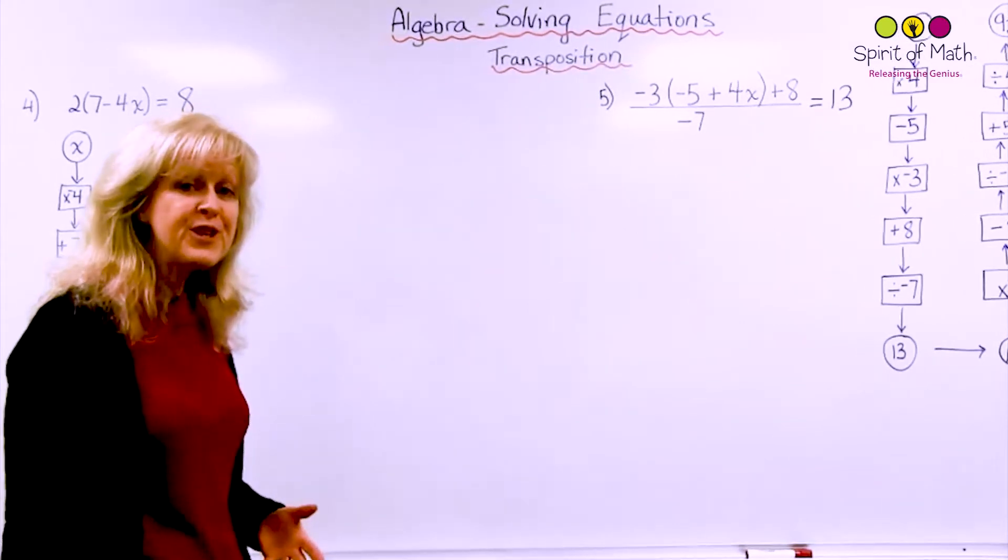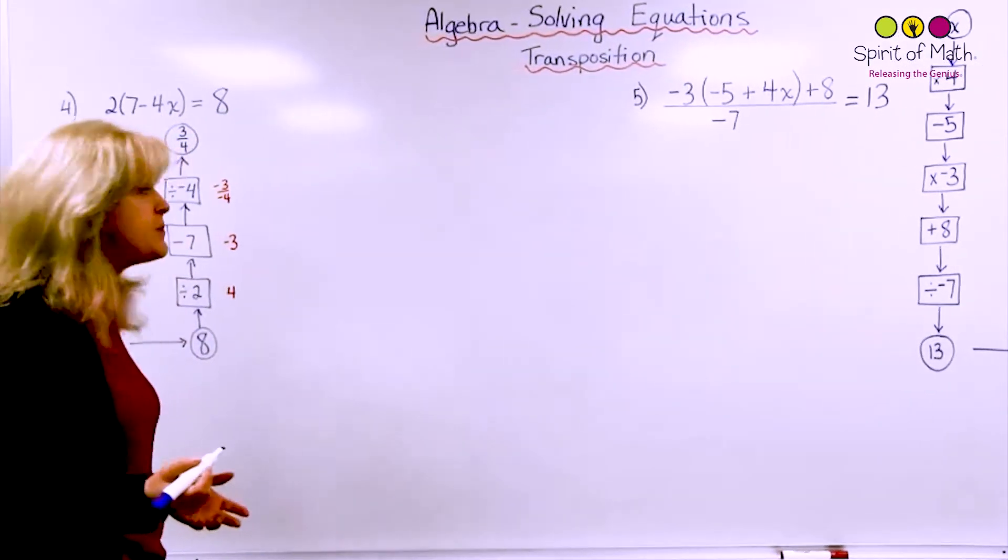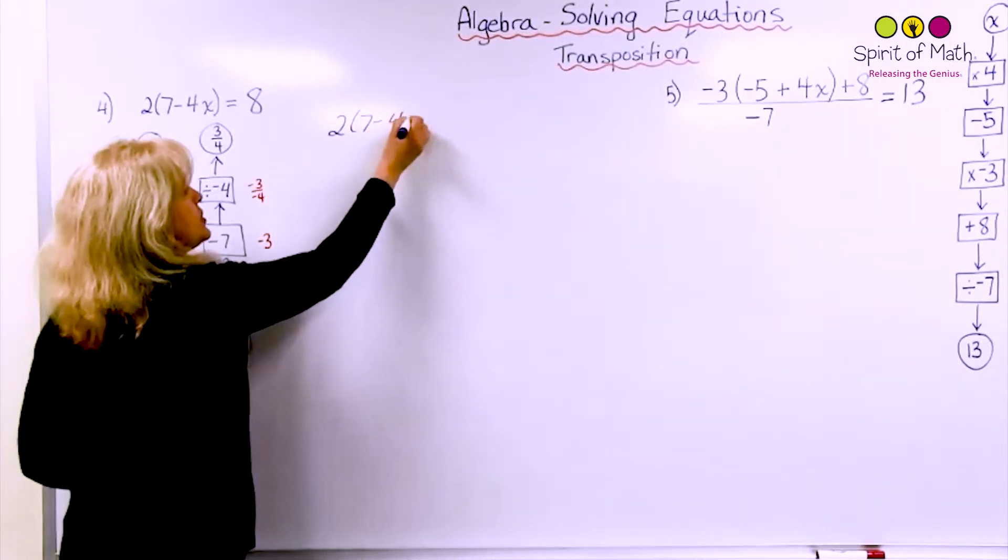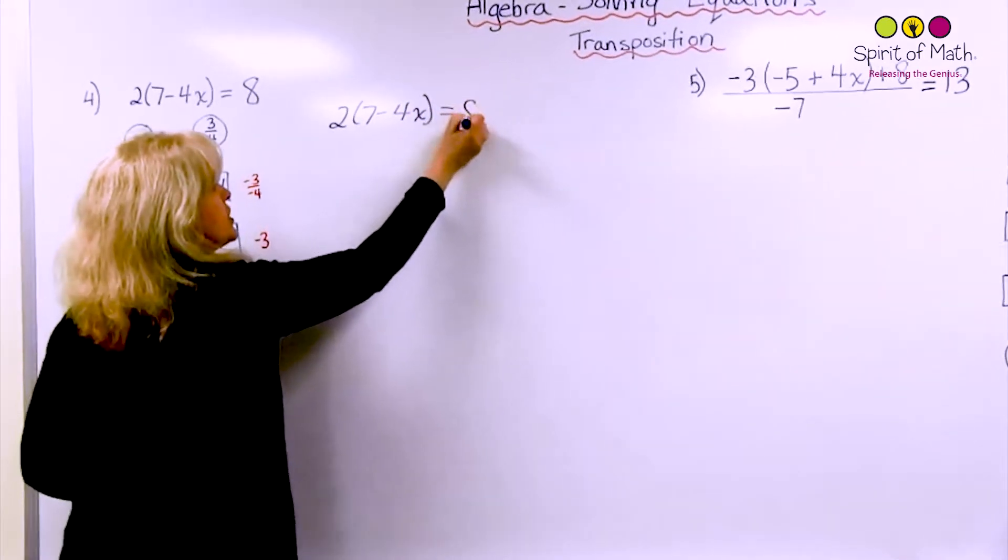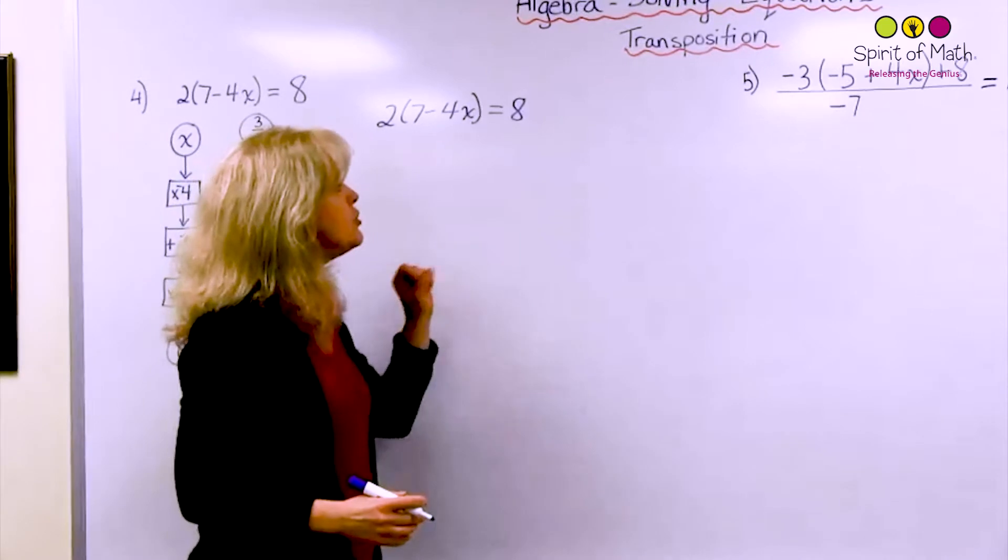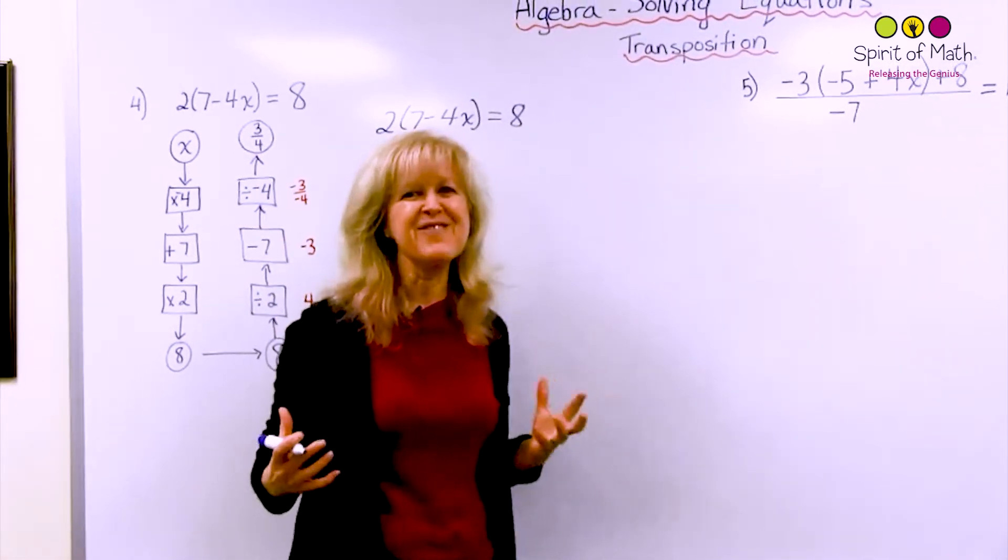From now on you're not going to be using flow charts, you will be using just transposition. When doing transposition you start with just writing out the equation and you're going to be showing equations all the way down. You don't put another equal sign beside it and then work across. That just doesn't work.